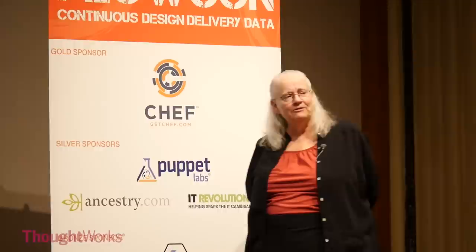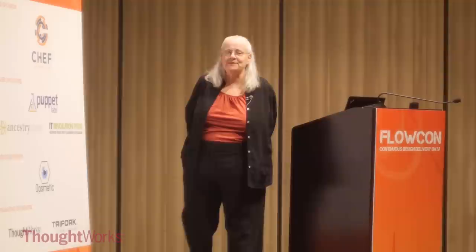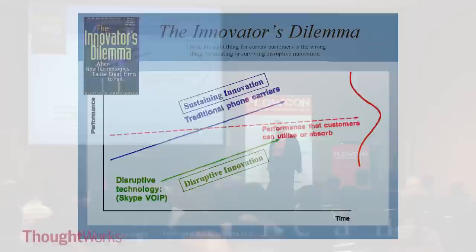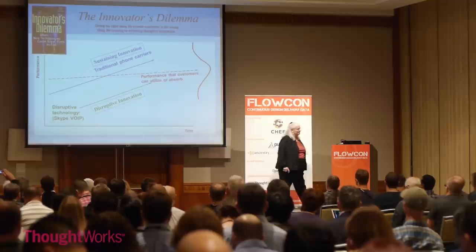One of the most interesting things — you remember Clayton Christensen, you remember the Innovator's Dilemma. He was the one who came up with the idea that there are two types of innovation. One is sustaining innovation: if you take care of the customers you have, your product will never be attacked. However, what you don't know is there are those customers you don't have, and that's where disruptive innovation comes in. The dilemma is that doing the right thing for your current customers is the wrong thing for surviving any kind of disruptive innovation in your market, which we have seen again and again.